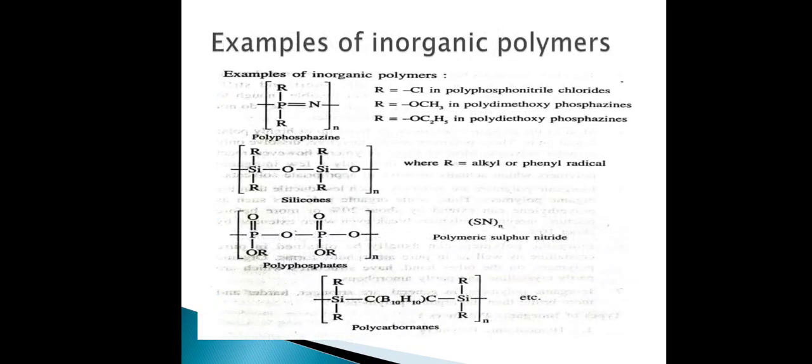Some examples of inorganic polymers are polyphosphazenes, silicones, polyphosphates, and polycarbogenes, etc. Here R is any alkyl or phenyl radical. These are the examples for inorganic polymers.